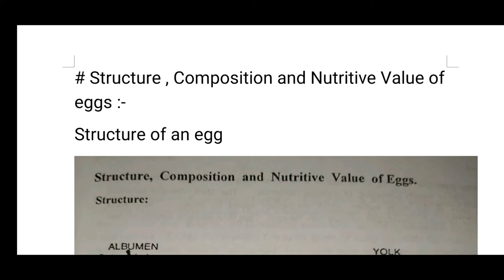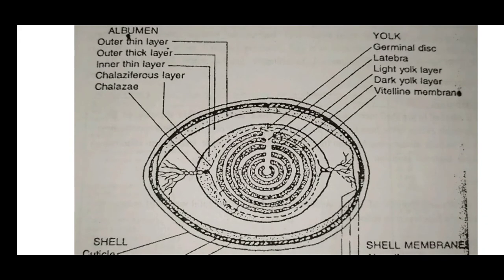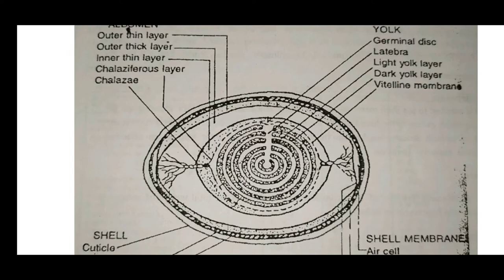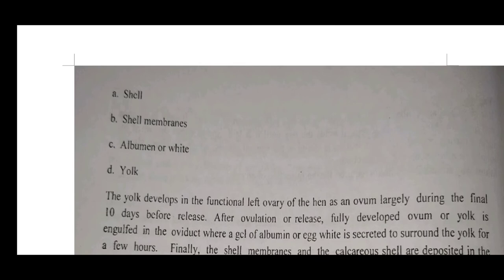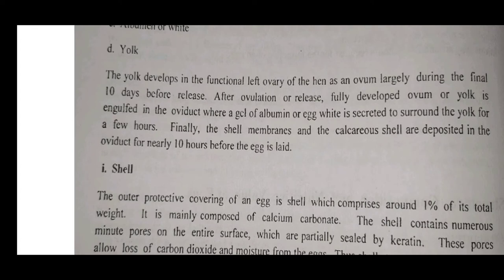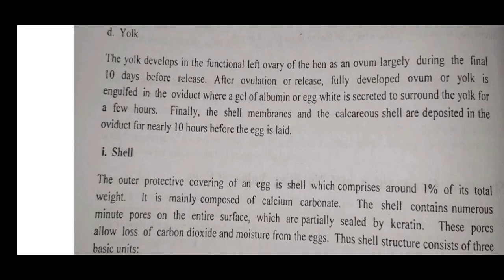The structure of an egg contains albumen, yolk, shell, and shell membrane. The yolk develops in the functional left ovary of the hen as an ovum, largely during the final 10 days before release. After ovulation, the fully developed ovum or yolk is received in the oviduct, where egg white is secreted to surround the yolk. Finally, the shell membranes and calcareous shell are deposited in the oviduct for nearly 10 hours before the egg is laid.